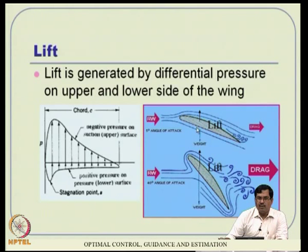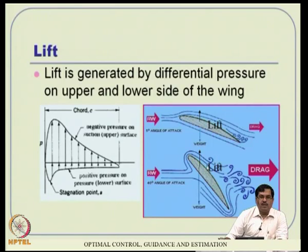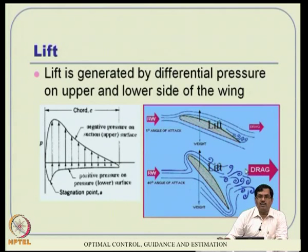If the angle of attack is larger, you can get higher lift up to a limit - for example, comparing 5 degrees versus 40 degrees angle of attack. After a certain point, lift starts decreasing. Essentially, increasing this angle while keeping speed constant increases lift, but the price is that drag also becomes high.